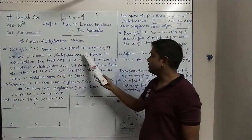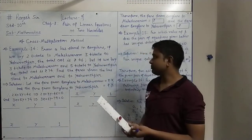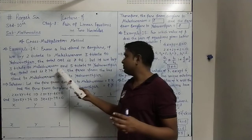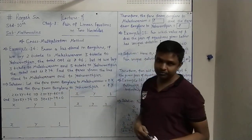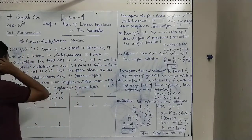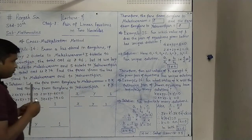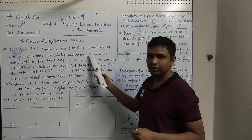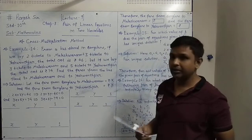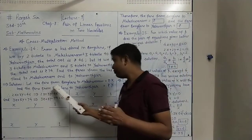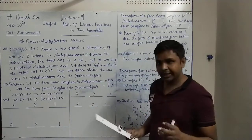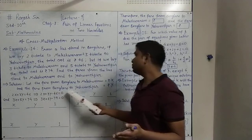Example 14: From a bus stand in Bangalore, if we buy 2 tickets to Malishwaram and 3 tickets to S1 Pool, the total cost is 46. But if we buy 3 tickets to Malishwaram and 5 tickets to S1 Pool, the total cost is 74. Find the fares from the bus stand to Malishwaram and to S1 Pool. So the fare from Bangalore to Malishwaram is X, and fare from Bangalore to S1 Pool is Y.